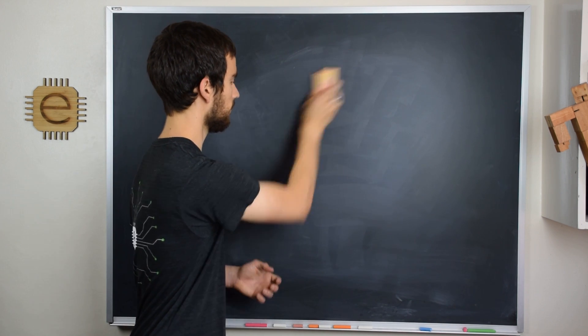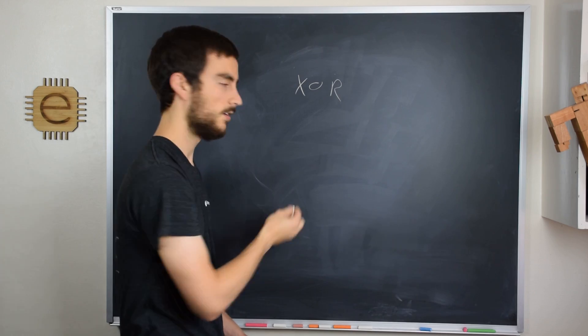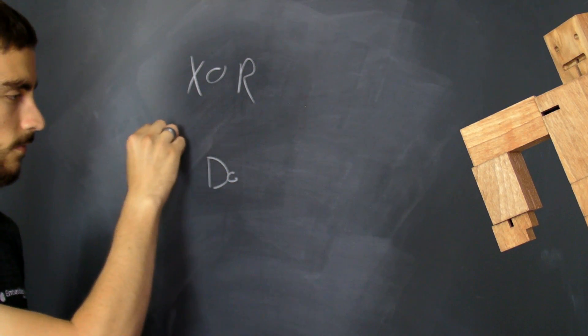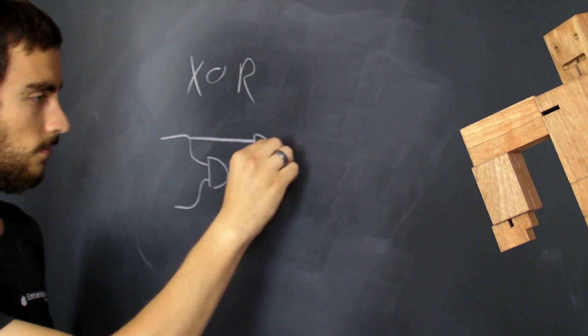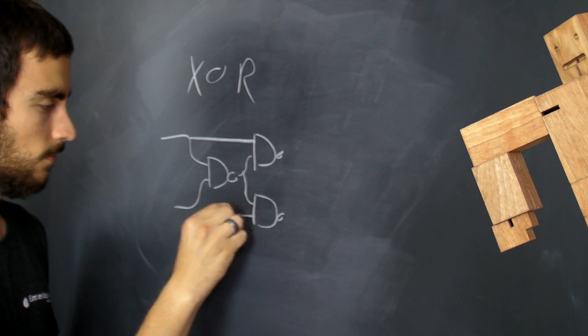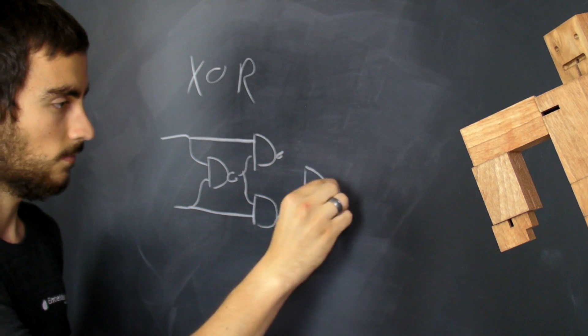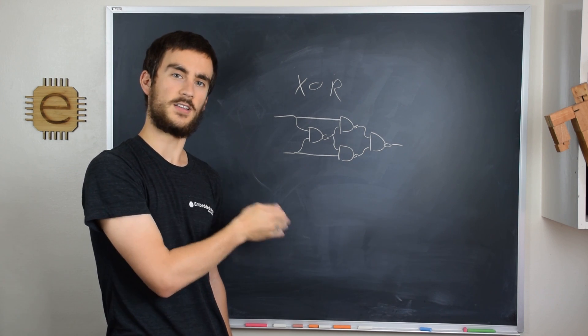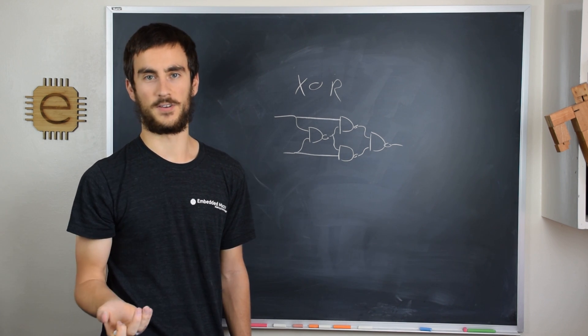an XOR is a little bit more complicated, and it looks something like this. So this shows you that you can make those four basic logic gates out of just NAND gates, and using any of those basic four logic gates, you can make any logic function.